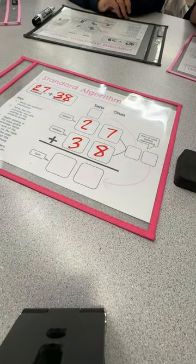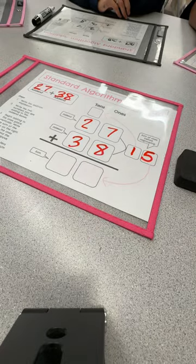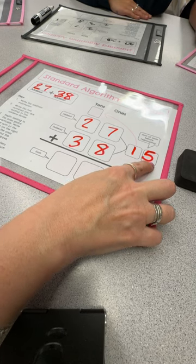So we're gonna write fifteen in this box. Now you see how the arrow is showing us where our ones go? How many ones did we get? Five.